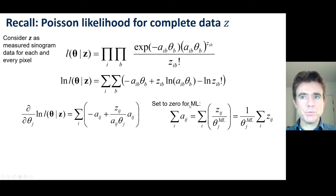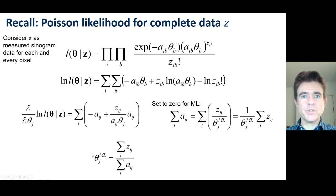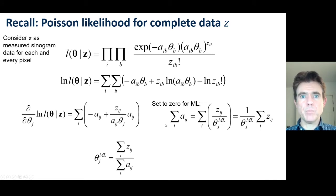By simple rearrangement, we get an expression saying that the maximum likelihood estimate for a pixel corresponds to taking the complete data associated with pixel J, summing up all the data within that complete data for pixel J, and then performing sensitivity normalisation. This is just the well-known A-transpose-1 sensitivity image used in MLEM reconstruction.